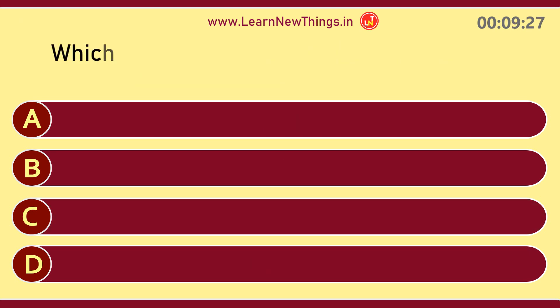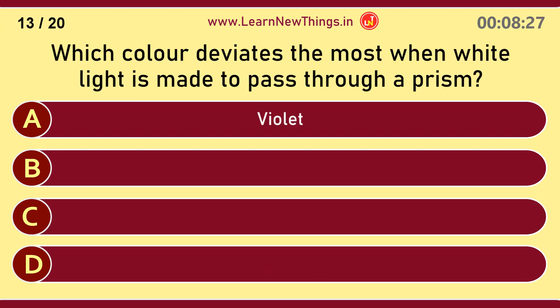Which color deviates the most when white light is made to pass through a prism? Violet.